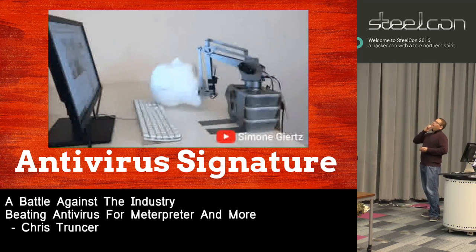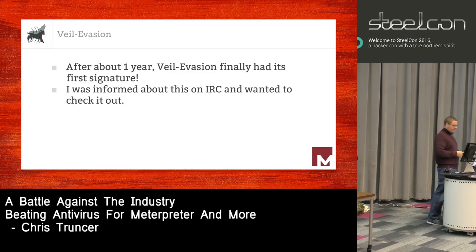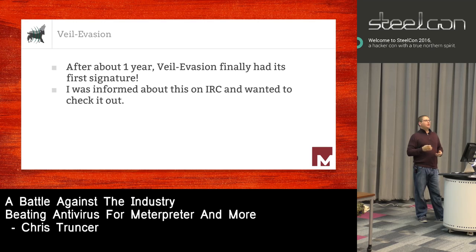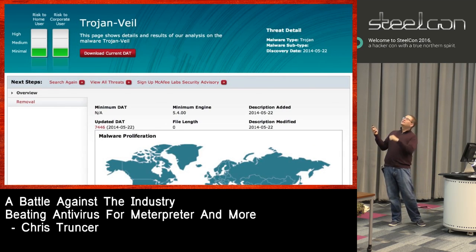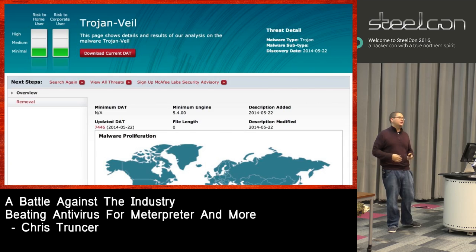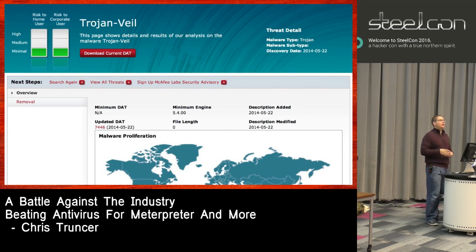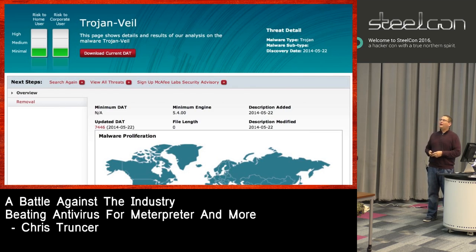About a year after Veil was released, someone on IRC told us they thought we'd gotten an AV signature created against us. McAfee had a page up saying they were detecting Veil — identifying it as a Trojan that could be caught as it runs. I tested it and it was legit. The Python-only payloads we had at the time were being caught. So I started looking at what needed to change.